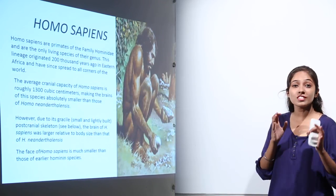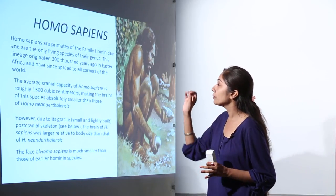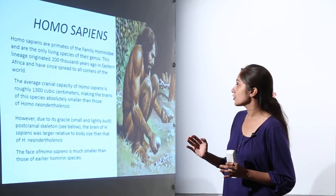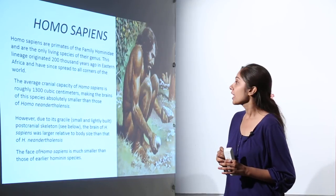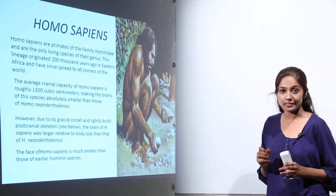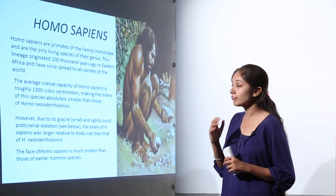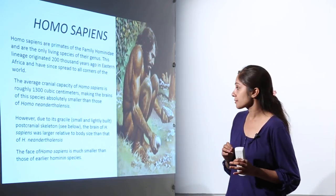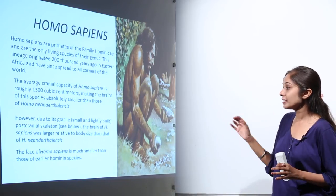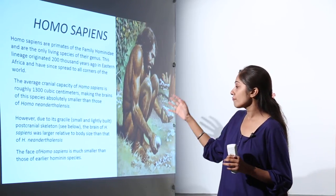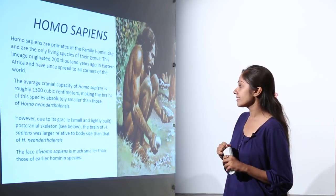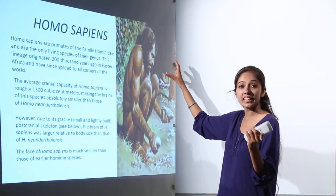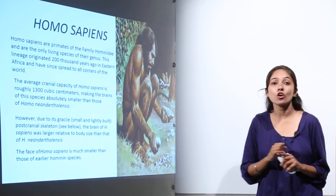Next we have Homo sapiens. Homo sapiens are primates of the family Hominidae and are the only living species of their genus. This lineage originated 200,000 years ago in eastern Africa and has since spread to all corners of the world. The average cranial capacity is roughly 1300 cubic centimeters, making the brain absolutely smaller than that of Homo neanderthalensis. However, due to their gracile, lightly built post-cranial skeleton, the brain of Homo sapiens was larger relative to body size. The face of Homo sapiens is much smaller than those of earlier hominin species.